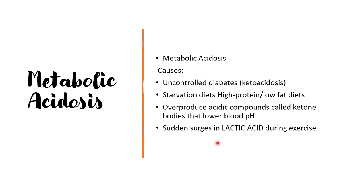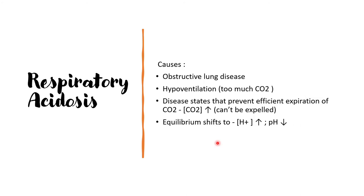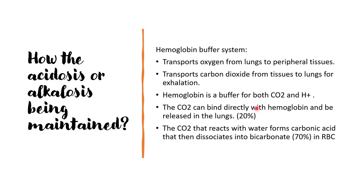During exercise there is formation of lactic acid, and sudden surges in lactic acid can also cause metabolic acidosis. Respiratory acidosis occurs due to hypoventilation — there is less removal of carbon dioxide. In respiratory alkalosis there is excess removal of carbon dioxide, but in respiratory acidosis there is less removal. If carbon dioxide is retained there is formation of more proton moiety and thus the blood pH decreases.